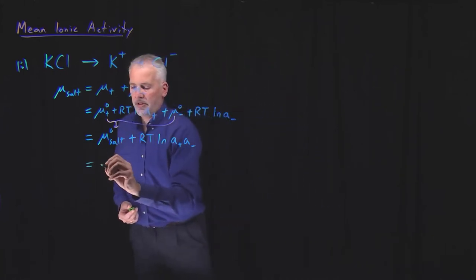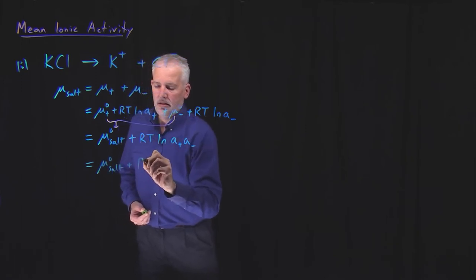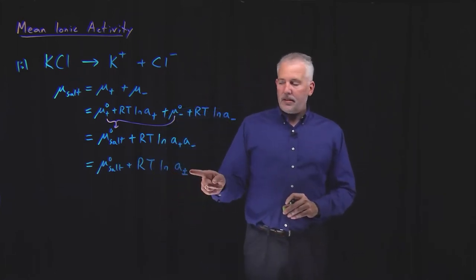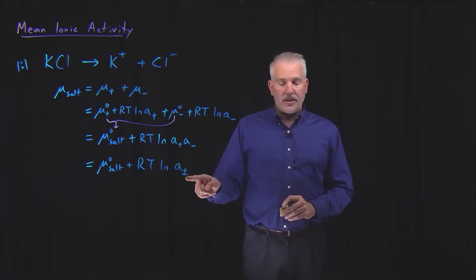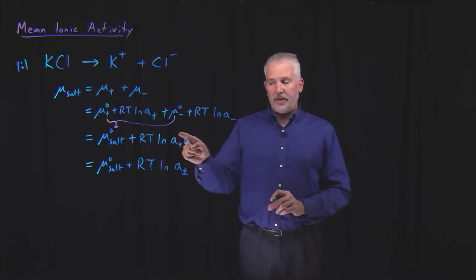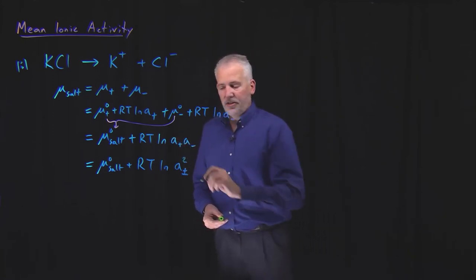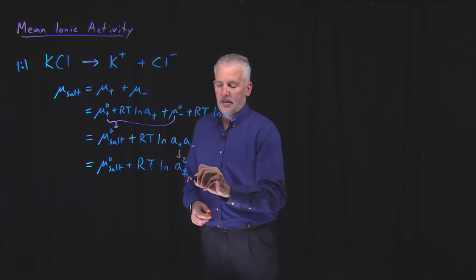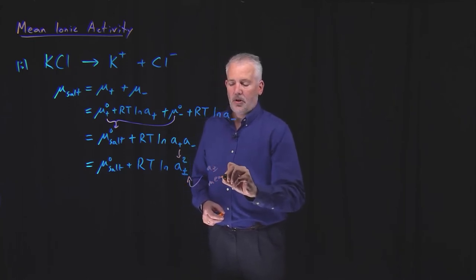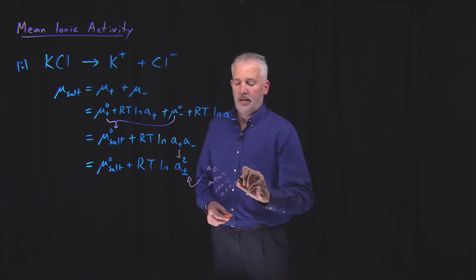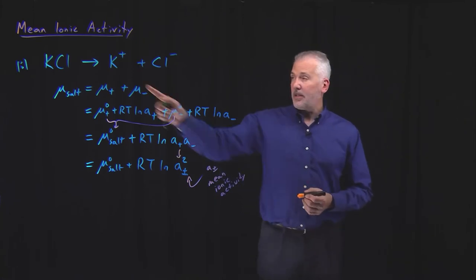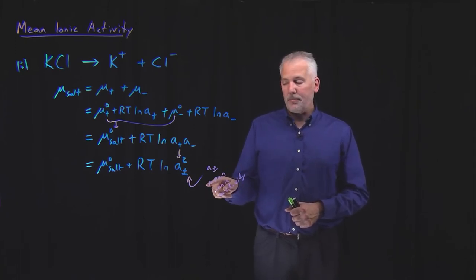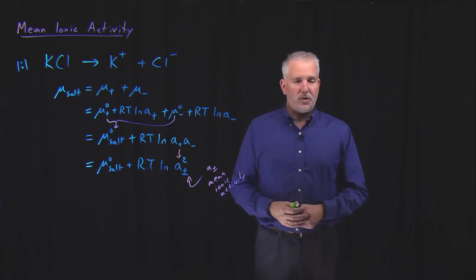We rewrite this as the natural log of a mean ionic activity A±. I had the activity of the cation times the activity of the anion, so I'll write this as A± squared. The quantity A± is what we call the mean ionic activity — it is an activity not of potassium alone nor of chloride alone, but a combination of the two. Specifically, it is a geometric mean, not an arithmetic mean: a mean activity for the two different ion types.